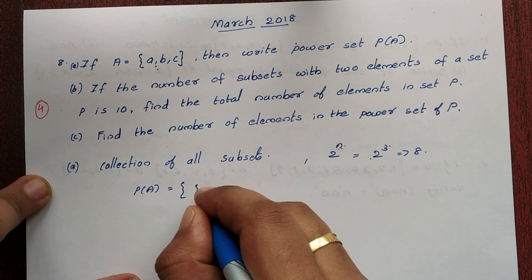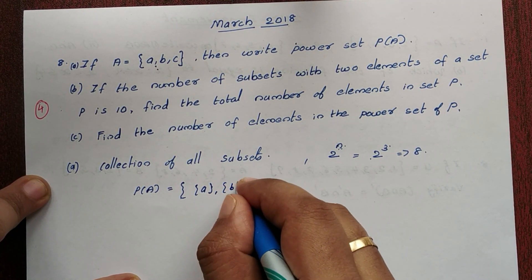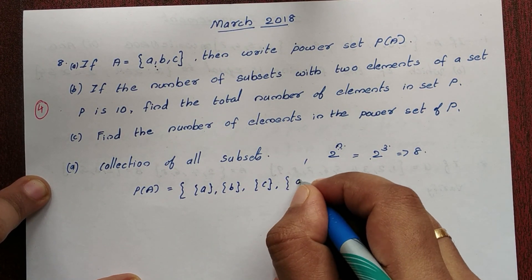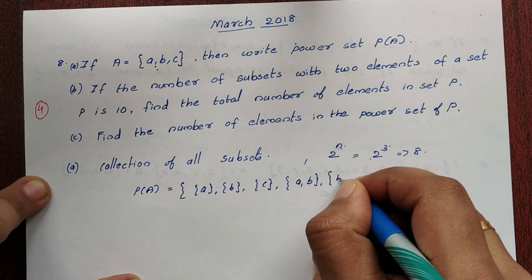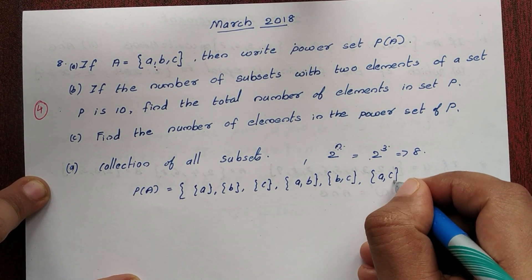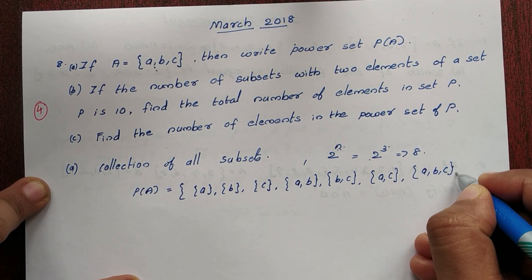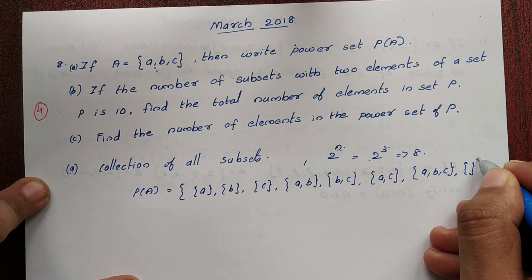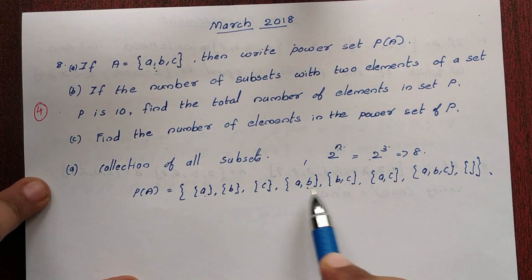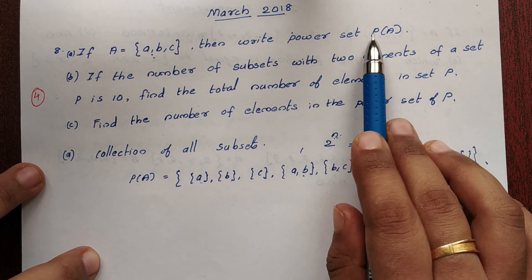The subsets are: single elements {a}, {b}, {c}. Then two-element subsets: {a,b}, {b,c}, {a,c}. Then the full set itself {a,b,c}, and the empty set. That gives us a total of 8 subsets. So that is the power set.